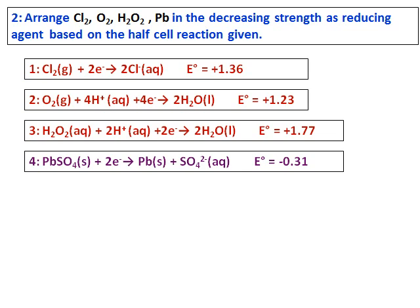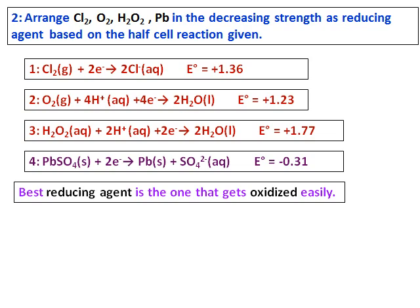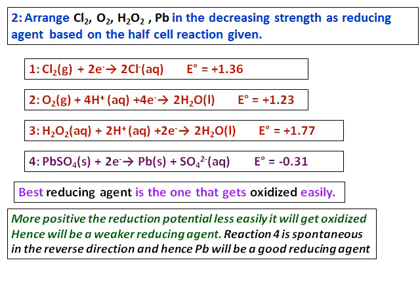They are asking for the reducing agent — the best reducing agent is the one that gets oxidized easily. Out of all four reactions, the fourth reaction with the negative E⁰ is the one more favorable in the reverse direction. That means Pb will be more easily oxidized to PbSO₄ rather than PbSO₄ getting reduced to Pb. Therefore, Pb will be the best reducing agent among the four.